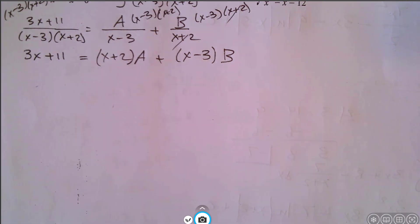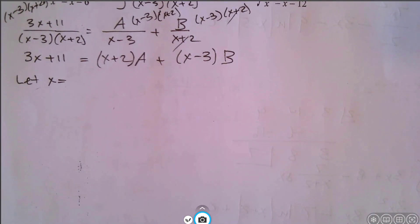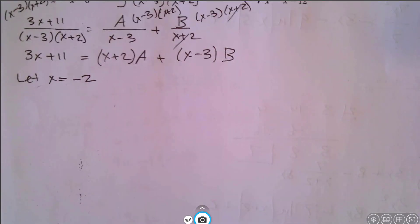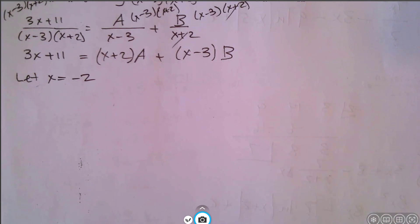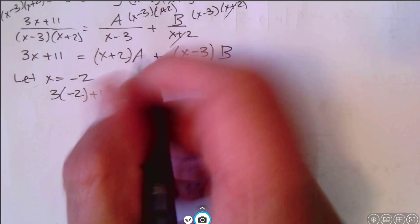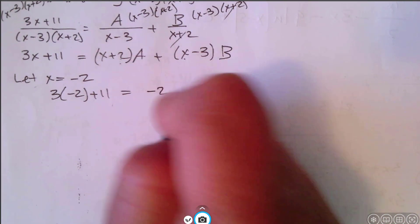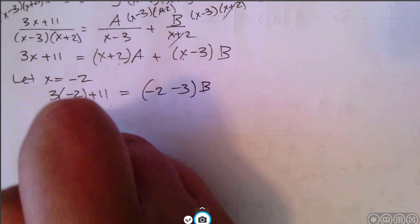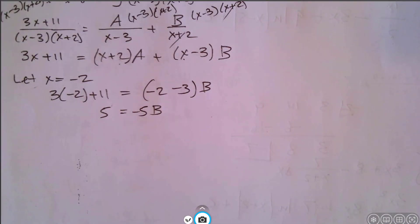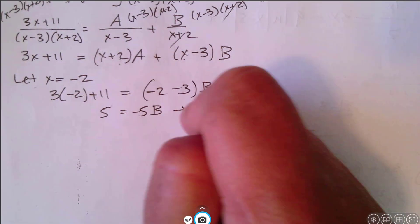We plug negative 2 in for all the x's. So we have 3 times negative 2 plus 11 on the left — that's negative 6 plus 11, which is 5. The a term becomes zero. On the right we have negative 2 minus 3 times b, which is negative 5b. So 5 equals negative 5b, and that gives us b equals negative 1.